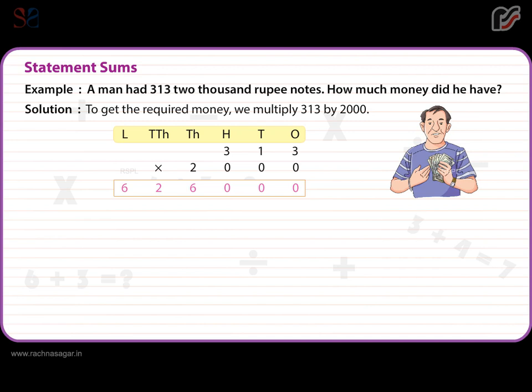Solution: To get the required money, we multiply 313 by 2000. Three hundreds, one tens, three ones multiplied by 2 thousands, zero hundreds, zero tens, zero ones is equal to 626,000. So he had 626,000 rupees.